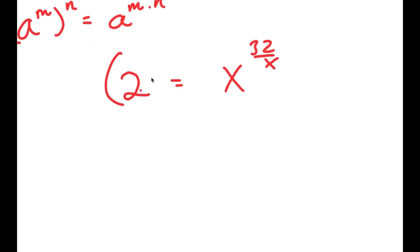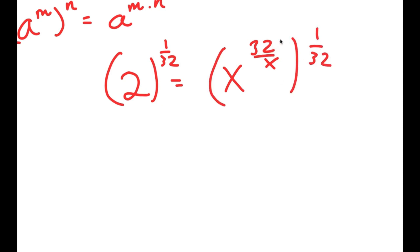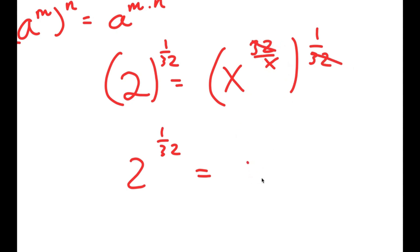Now from here, I'm going to take the power of 1 over 32 on both sides, and we're doing this to get rid of the 32 on the right-hand side. So for the left-hand side, I just have 2 to the power of 1 over 32. For the right-hand side, these two cancel out, so I get x to the power of 1 over x. That's all that's remaining.